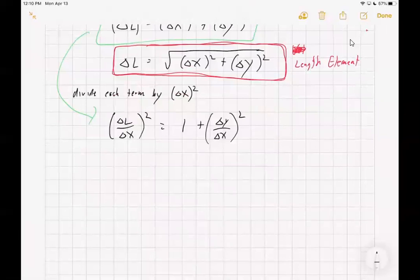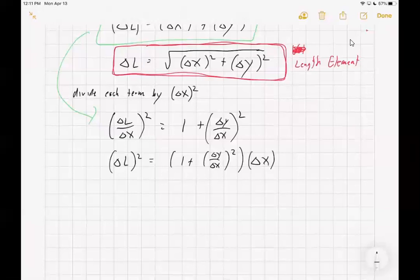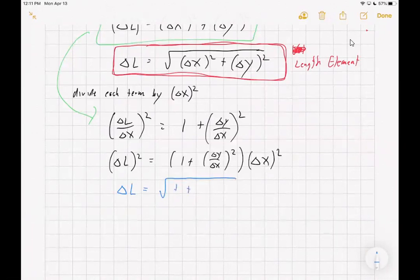So if I wanted to solve for delta L, I could first of all do a couple of things. Let's solve for delta L squared first. So delta L squared would equal the quantity 1 plus delta y over delta x squared times delta x squared. Now to get to delta L, we just need to take the square root of everything. So delta L, a piece of length, could be rewritten as the square root of 1 plus delta y over delta x squared, times delta x.